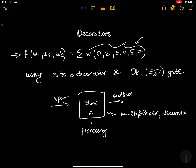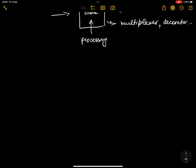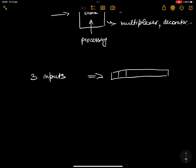In this particular case we are going to use a decoder and an OR gate. We know that we have three inputs. 3-to-8 means that you're going to have three inputs and one output with a length of eight bits — one, two, three, four, five, six, seven, eight. Do not be confused: one output, but with the length of eight bits.